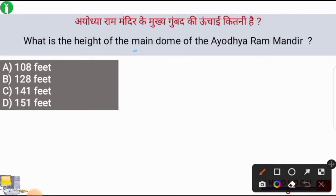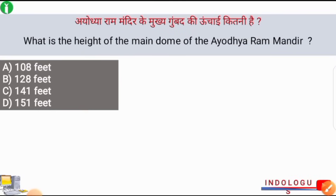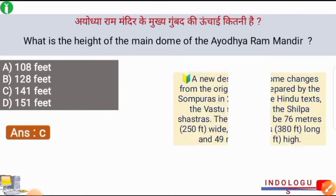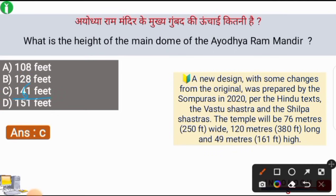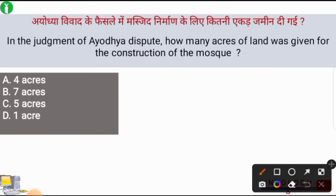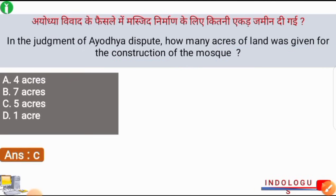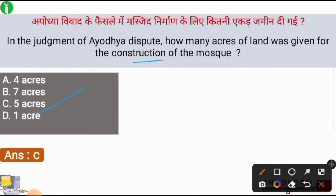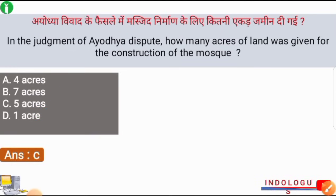What is the height of the main dome of the Ayodhya Ram Mandir? The correct answer is option C, i.e. 161 feet — we have already discussed this question. In the judgment of the Ayodhya dispute, how many acres of land was given for the construction of the mosque? The correct answer is option number C — 5 acres of land was given to the Muslims for the construction of the mosque.